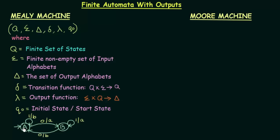Here we have an example of a Mealy machine. A is the starting state and B is another state. A on getting input 1 goes to A itself and produces output b. A on getting input 0 goes to B and produces output small a. B on getting input 1 stays in B and produces output small a. B on getting input 0 goes to A and produces output small b.